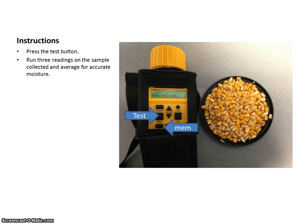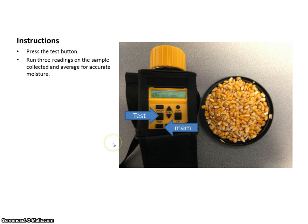Then you push the test button. The unit will take a few seconds to run the test, and it'll come up and tell you what the moisture, temperature, et cetera, is of the grain, and then you'll want to hit the memory button to store that. It's a good idea when you're taking moisture to run at least three samples to get a good average for an accurate moisture.